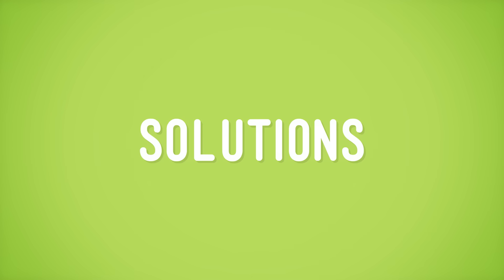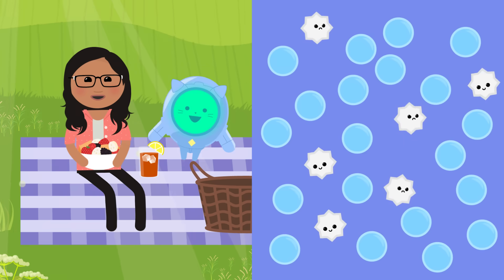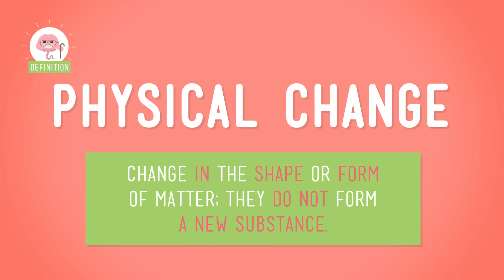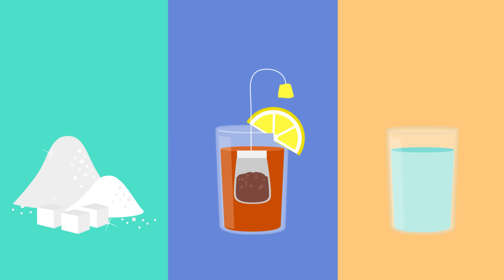You already know a lot about matter, like how it can change between different states, like solids, liquids, and gases. You also know that matter can be part of mixtures called solutions. And in solutions, the particles that make up matter become equally distributed in a container, like the sugar in water molecules in our picnic sweet tea. And even though we didn't know it then, that sugar went through what's called a physical change. A physical change is a change in the shape or form of matter. Physical changes do not form a new substance, and they can usually be undone, like how we were able to separate the sugar from the tea when we heated the tea so that the water evaporated.